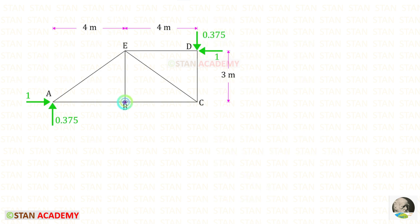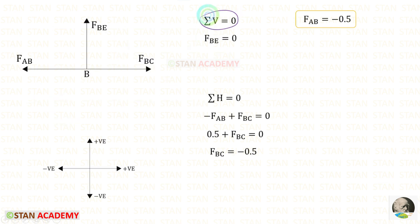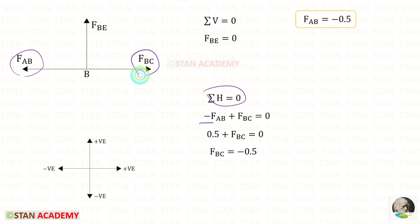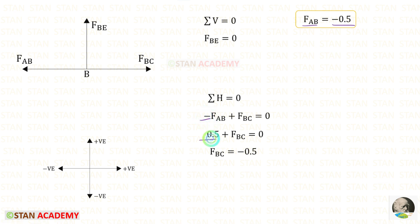Taking joint B in the unit load case: applying Sigma V = 0, for F_BE we get 0. Applying Sigma H = 0: F_AB acts towards the left (negative) and F_BC towards the right (positive). Applying the value of F_AB (−0.5), noting negative × negative = positive, for F_BC we get −0.5.